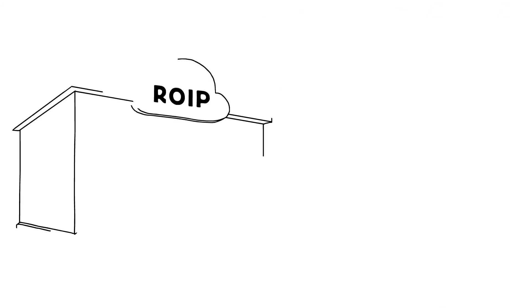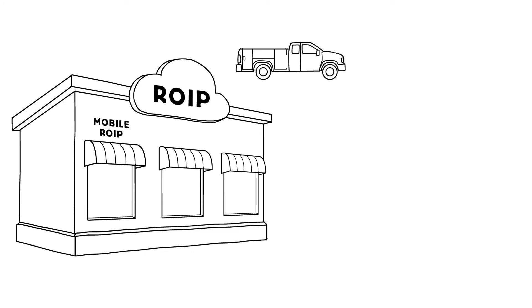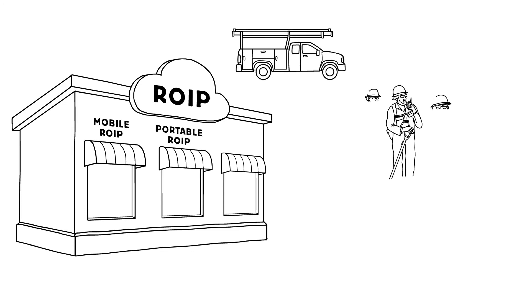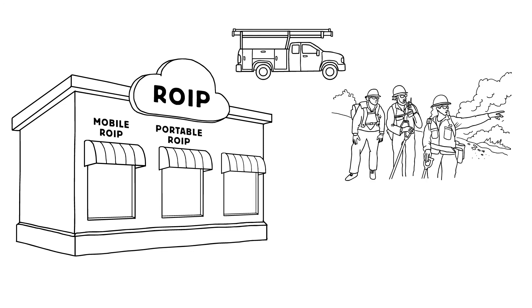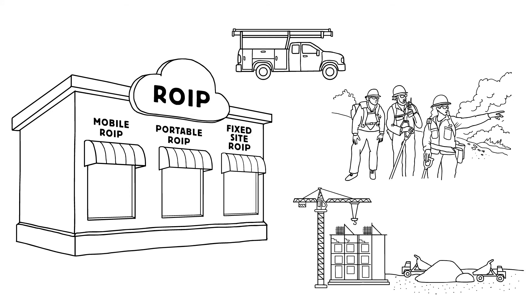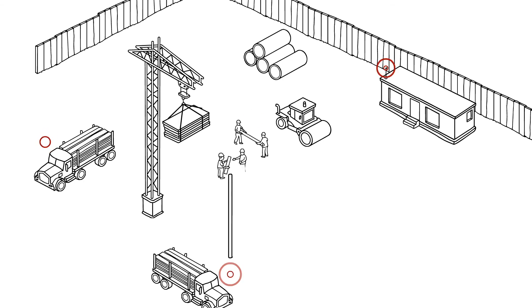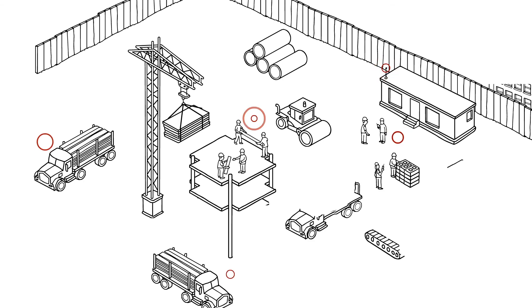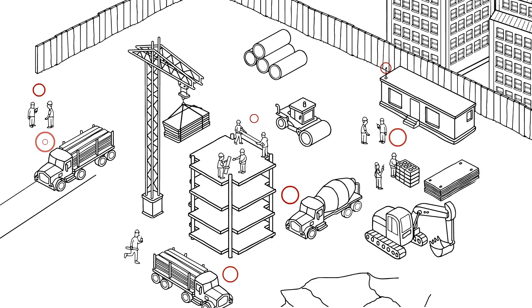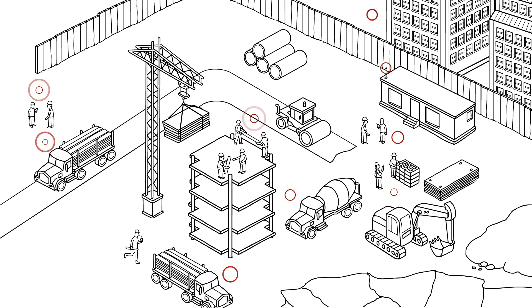ROIP comes in a variety of flavors. Mobile ROIP uses hardware perfect for vehicles. Portable ROIP is ideal for teams on the go. And fixed-site ROIP is used in buildings and job sites. The flexibility of ROIP allows you to create a private push-to-talk network tailored to meet your specific operational requirements.